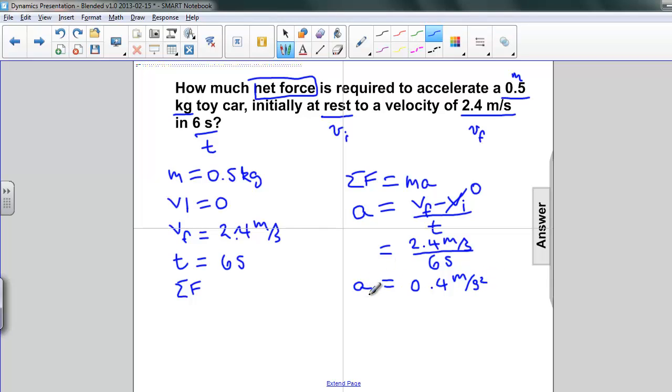So this is our intermediate answer. Now we can plug this back in to the net force. We know the mass that was given, 0.5 kilograms, and we have the acceleration, 0.4 meters per second squared.